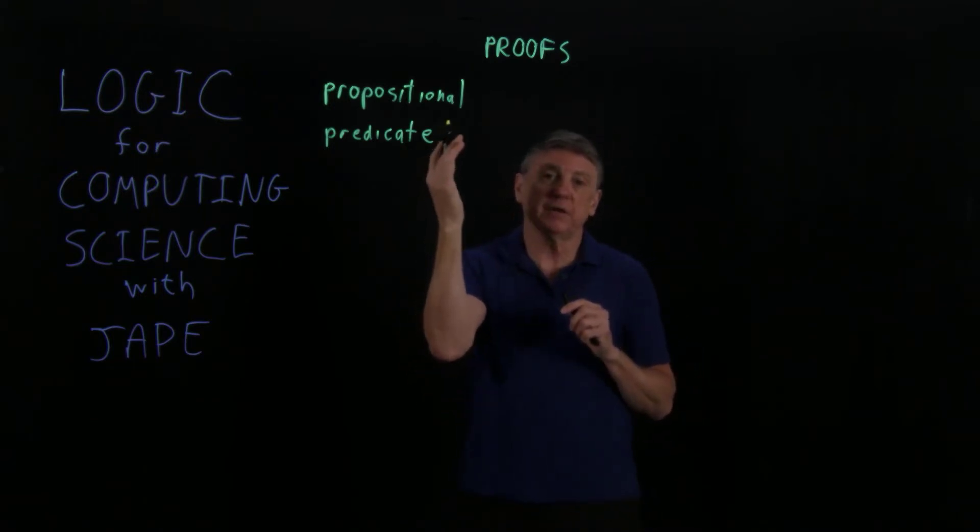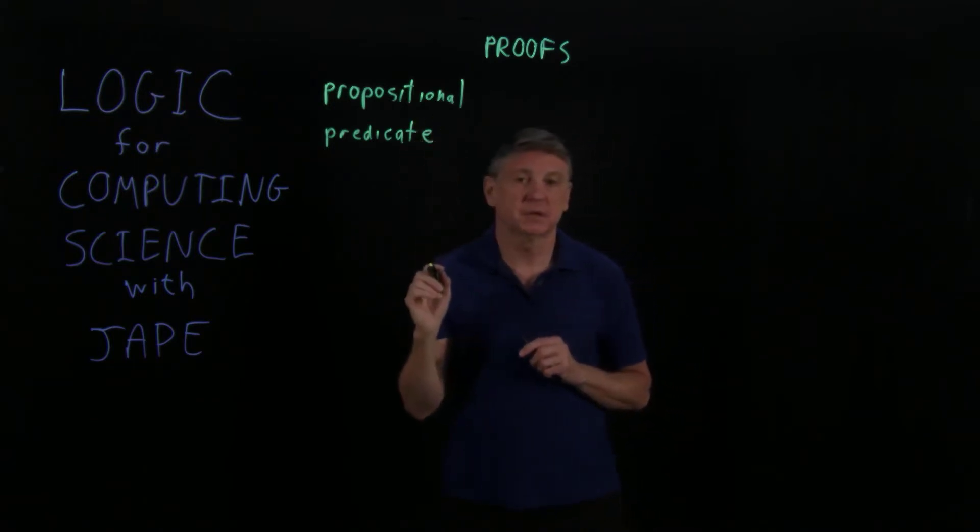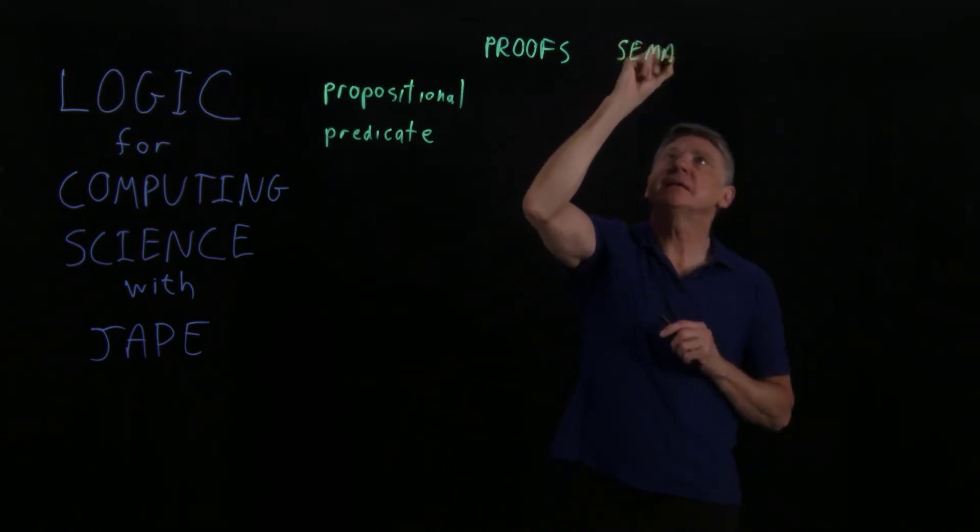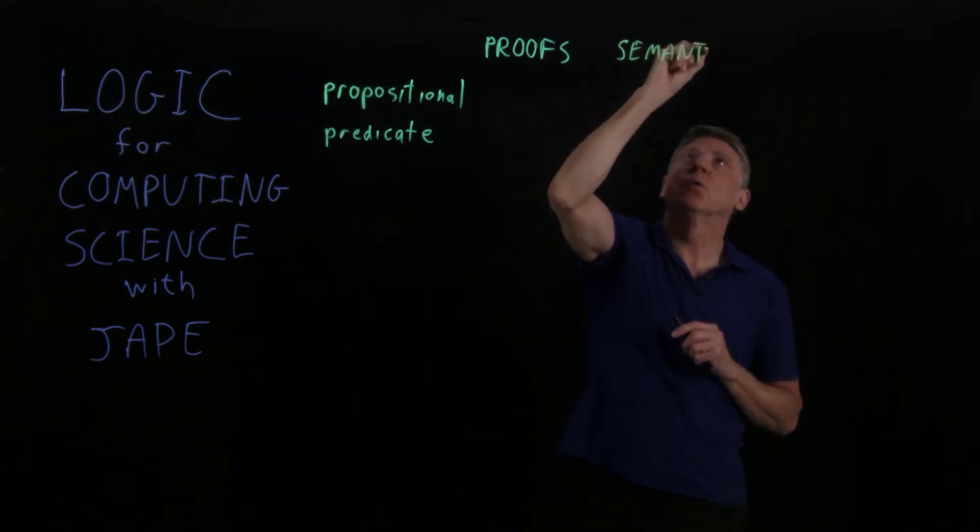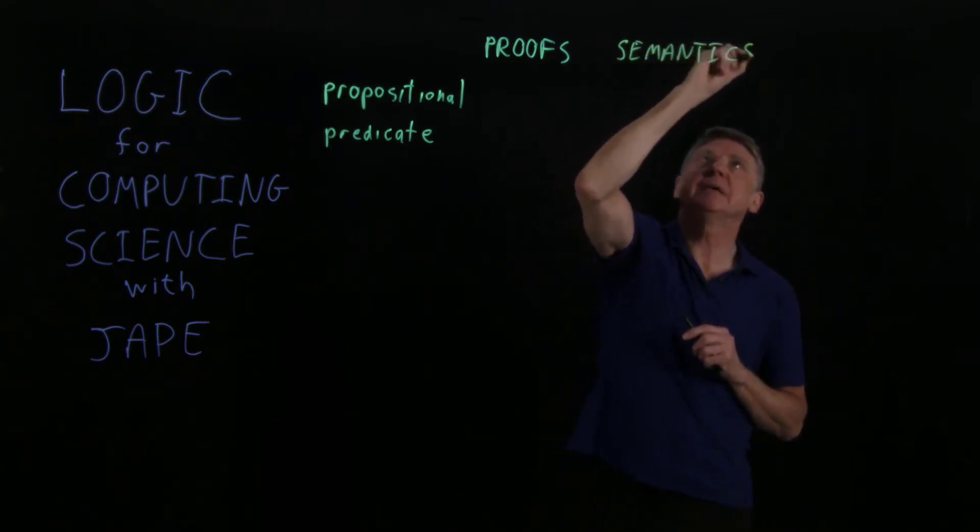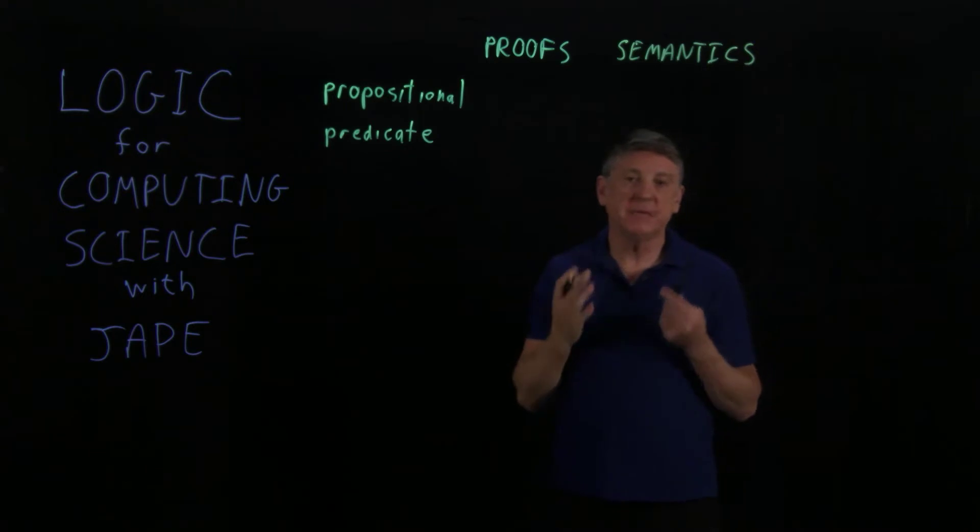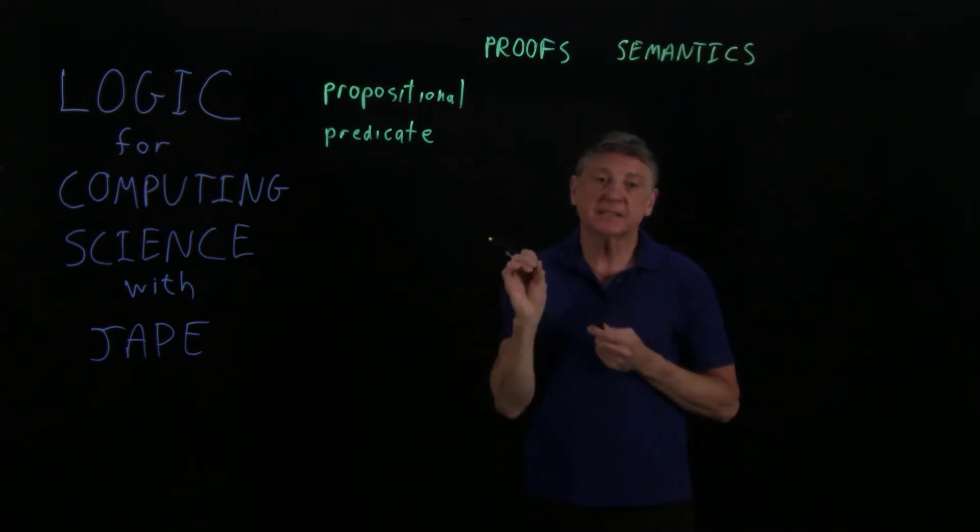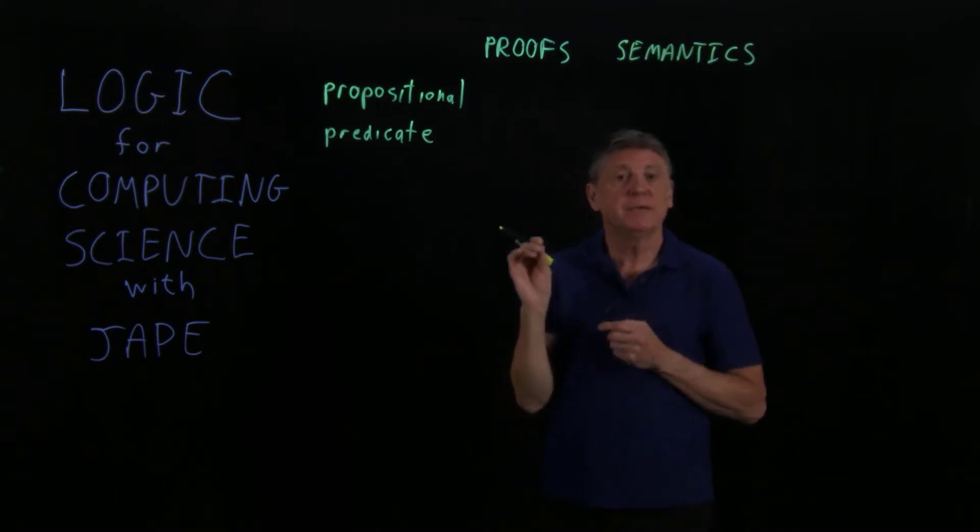After we've done the proofs, for example in propositional logic, we'll then look at what's called semantics. And semantics is a word that basically means what meaning we assign them. So in propositional logic, the basic symbols that we'll look at can be thought of as either true or false.